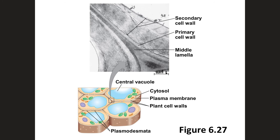The cell wall of plants is an extracellular structure that distinguishes plant cells from animal cells. Prokaryotes, fungi, and some unicellular eukaryotes also have cell walls. The cell wall protects the plant, maintains its shape, and prevents excessive uptake of water. Plant cell walls are made of cellulose fibers embedded in other polysaccharides and protein. Plant cell walls have multiple layers: the primary cell wall, which is relatively thin and flexible; the middle lamella, a thin layer between the primary walls of adjacent cells; and in some cells, a secondary cell wall added between the plasma membrane and the primary cell wall.